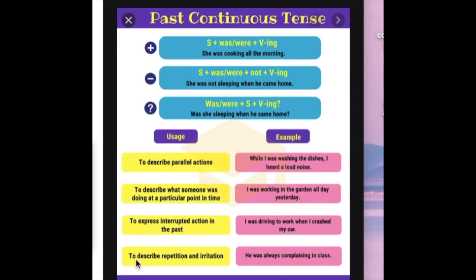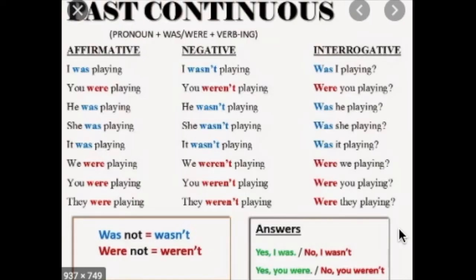And finally, to describe repetition and irritation — he was always complaining in class — él siempre estaba quejándose en clase. So, this is a review. Esto también es un repaso. Evidentemente nos va a ayudar para nuestros proyectos de evaluación. To share with you now this small chart about past continuous.